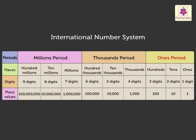The ones period consists of the places ones, tens, and hundreds. The thousands period has the places thousands, ten-thousands, and hundred-thousands. And the millions period has millions, ten-millions, and hundred-millions. Since we are studying numbers up to seven digits in this grade, we will learn only up to the millions place.